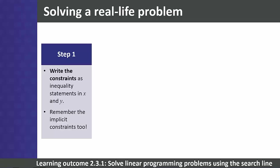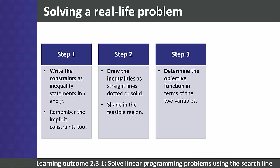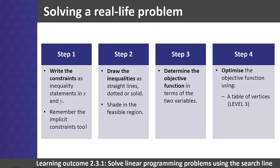Step 2: draw the inequalities as straight lines — remember that some may be solid lines and some dotted lines. Shade the feasible region that will satisfy all the constraints. Step 3: ask the question from the real-life problem — what must the maximum or minimum value be? Step 4: find the optimal solution using either a table of vertices or the search line method.